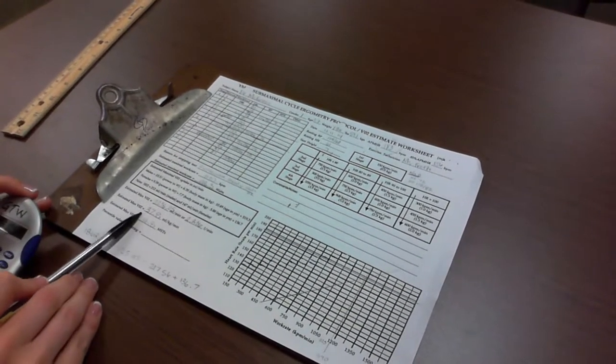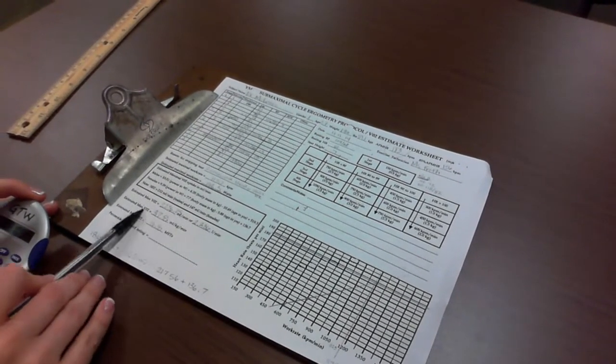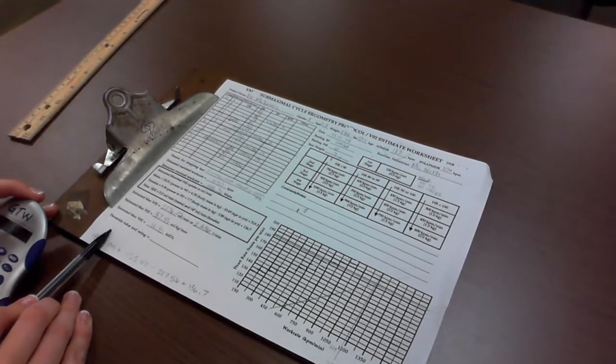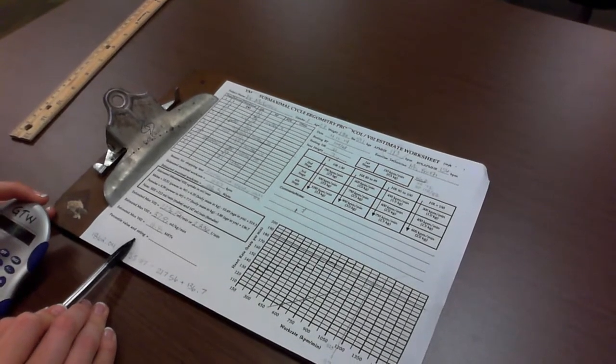After that, we can look up her max VO2 relative in the guidelines in Chapter 4 to find her percentile value and rating for max VO2.